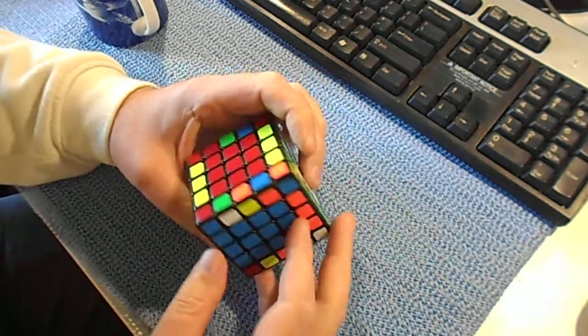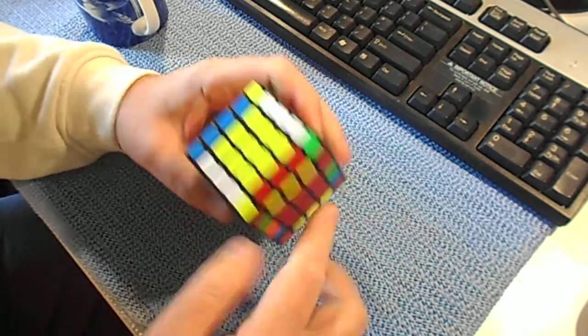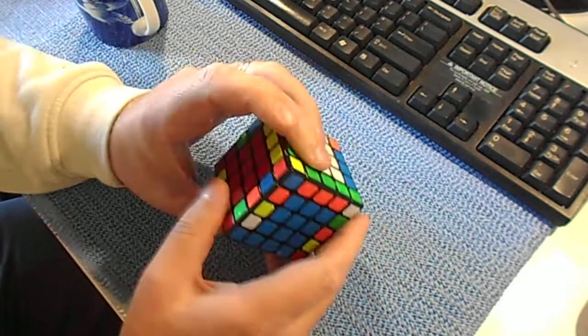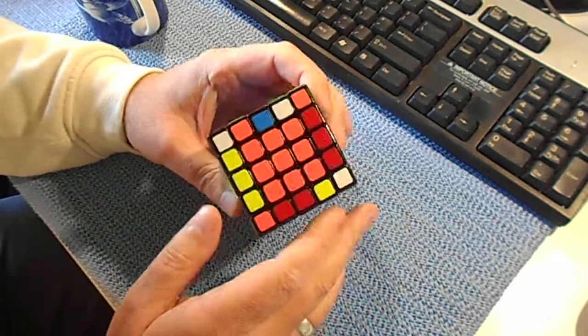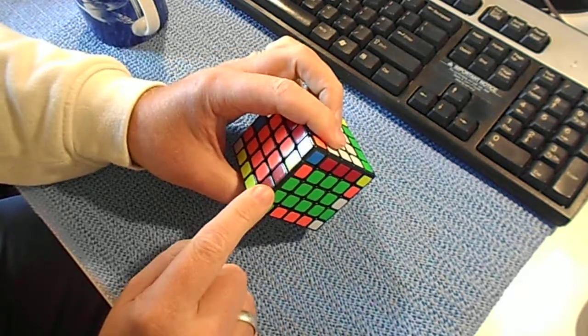Okay, here's how I do last four edges. As you can see, my bottom layer and my top layer are solved. So when I get to this stage, I scan around and search for something that's solved already.